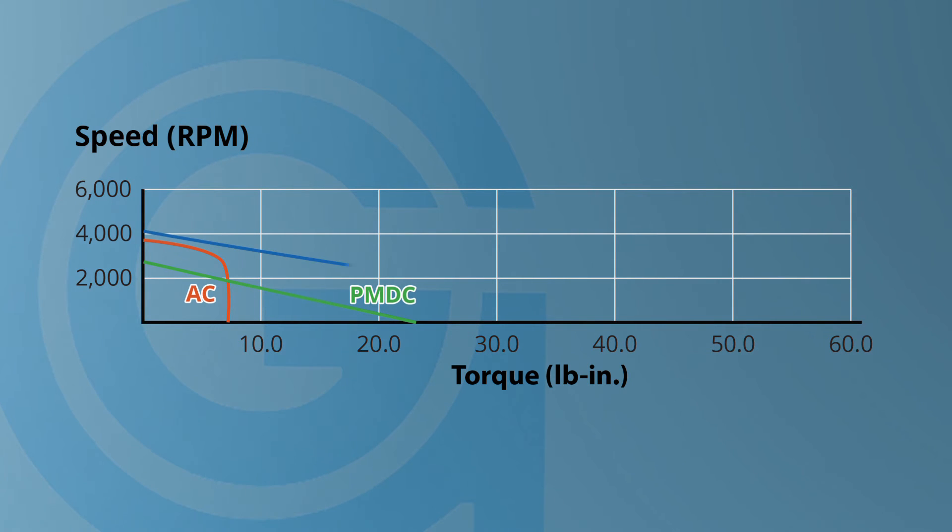This means, as torque increases, the speed will go down at a rate equal to the change in torque. The BLDC motor also has a much higher starting torque.